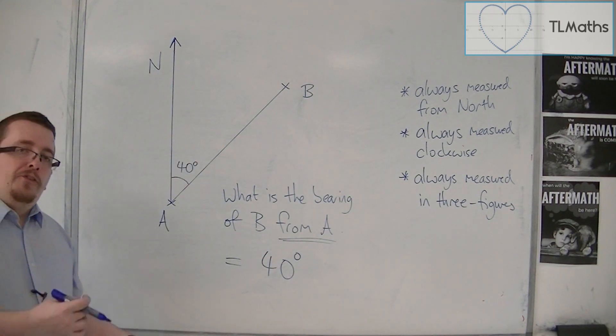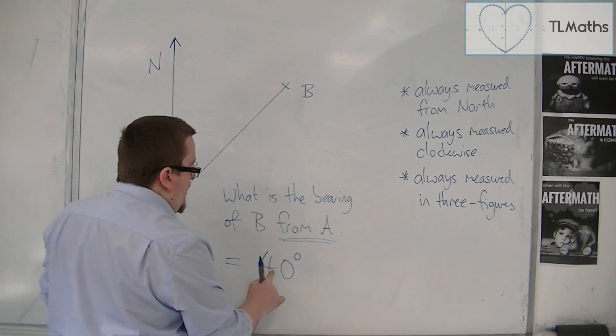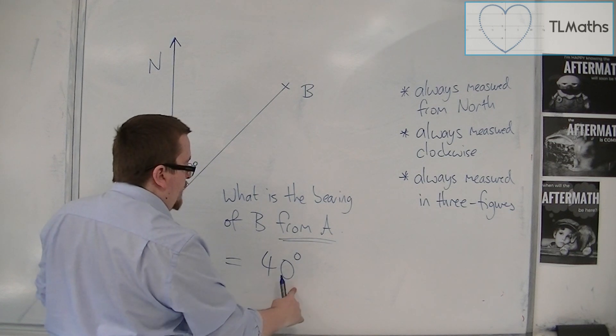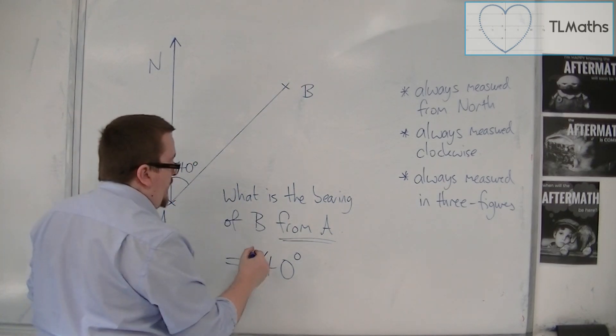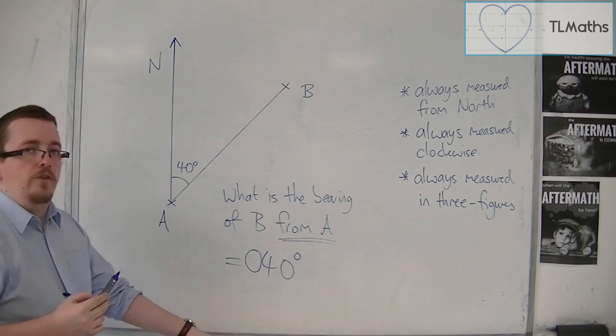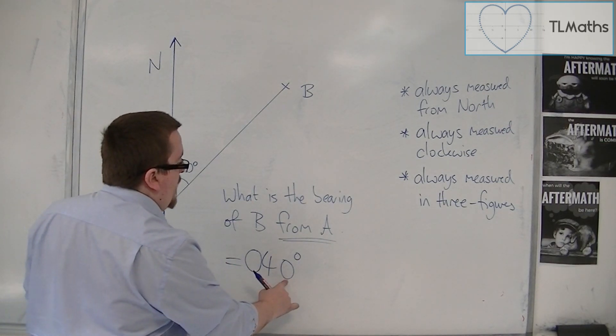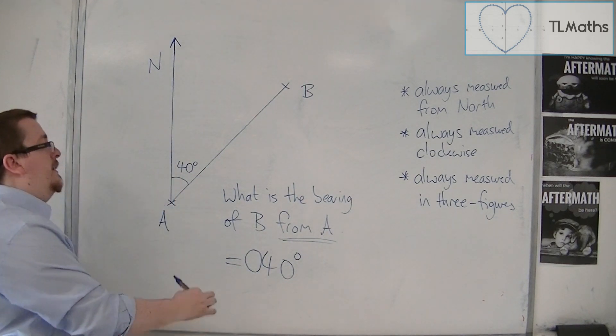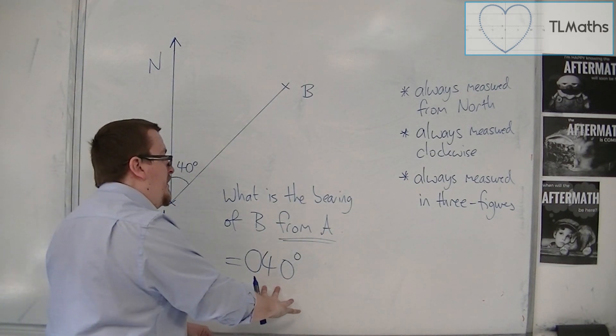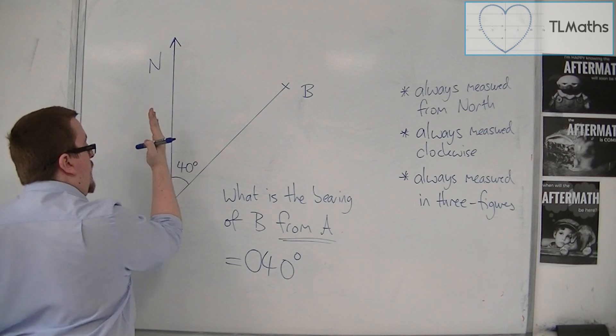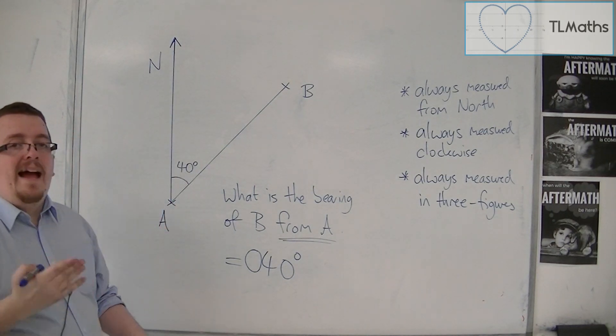It must be three figures, three numbers. And if it's less than 100, we're just going to stick a zero on the front. And that makes it a three-figure bearing, which tells me that I need to move 40 degrees from north so that I am now pointing at B.